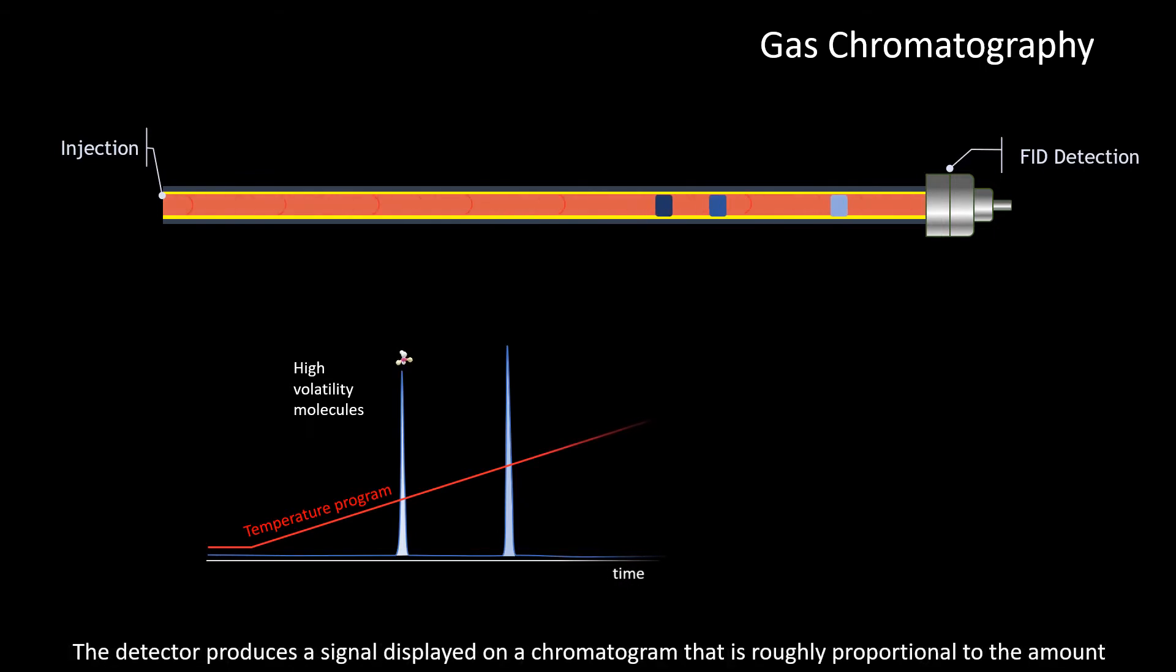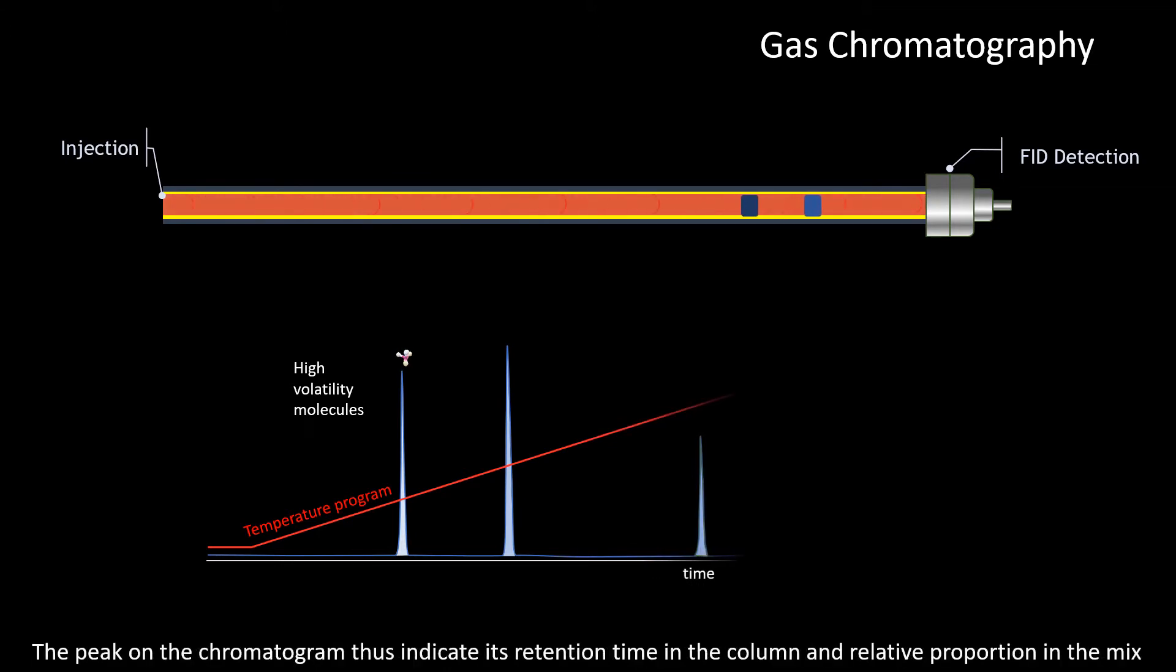The detector produces a signal displayed on a chromatogram that is roughly proportional to the amount. The peak on the chromatogram thus indicates its retention time in the column and relative proportion in the mix.